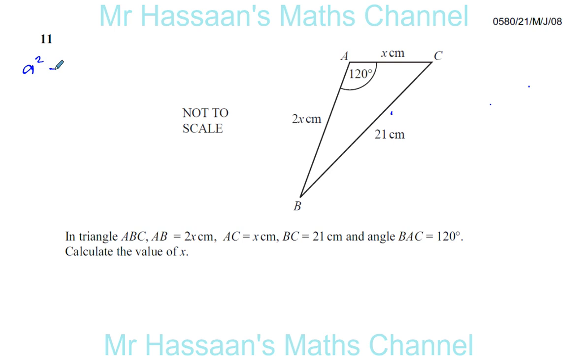So the cosine rule is a squared equals b squared plus c squared minus 2bc times cosine a, which you should know. And you should know how to quote it, how to apply it, which is more important.